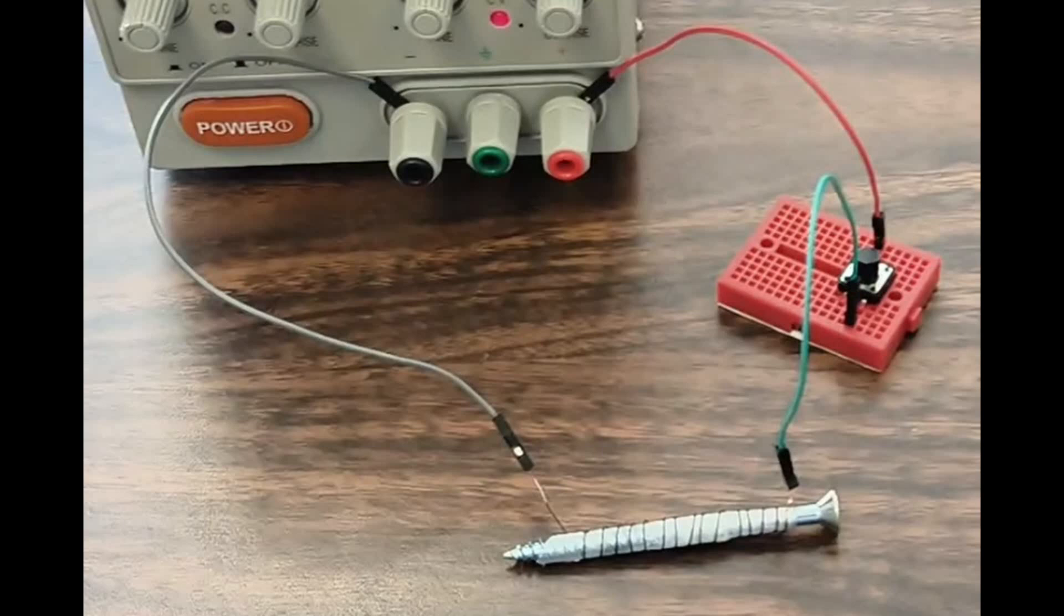Finally, connect one end of the electromagnet to one of the connectors from the DC power supply, and the other end to the connector from the breadboard. Now we are ready to begin the experiment.